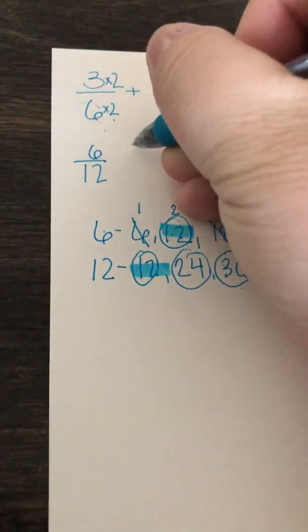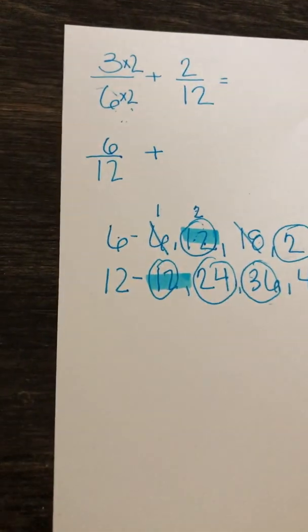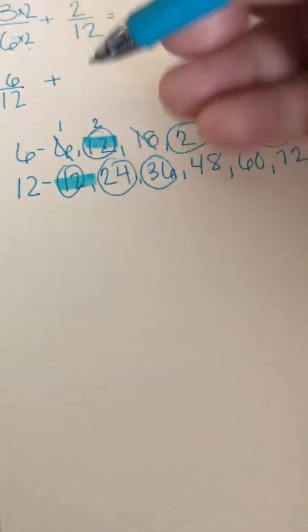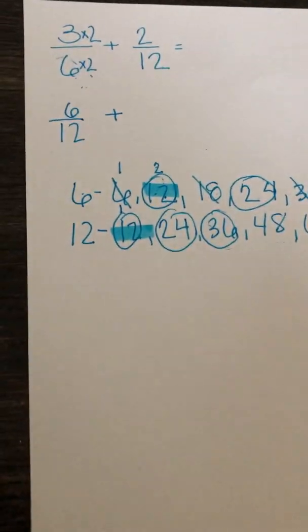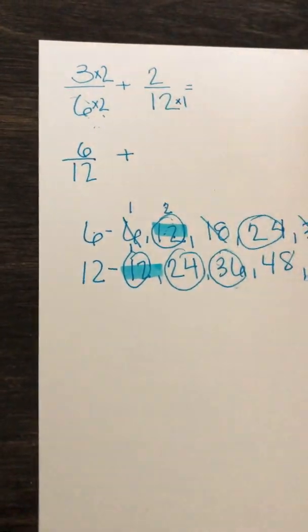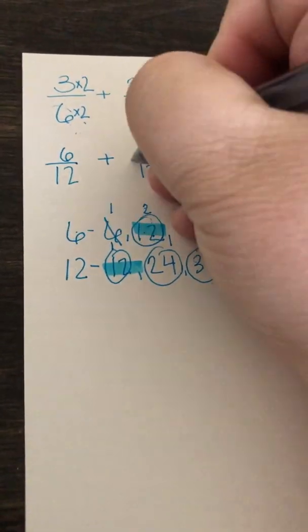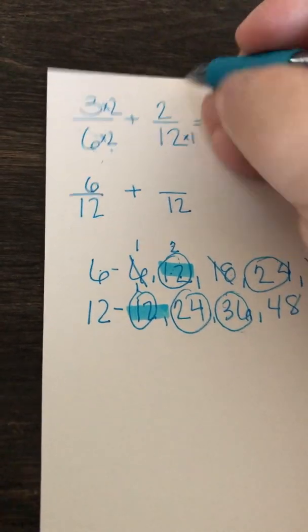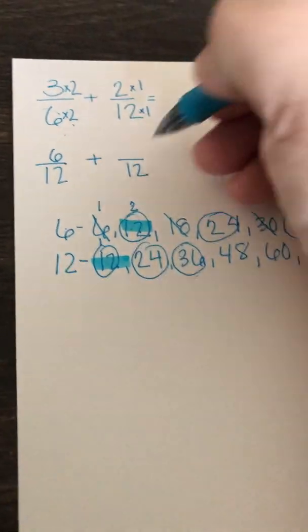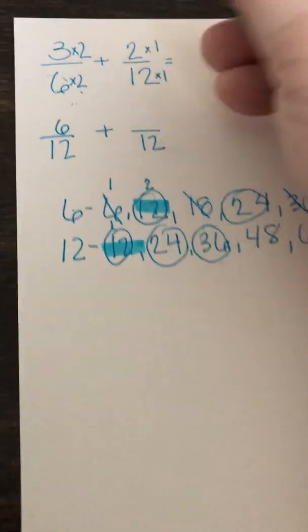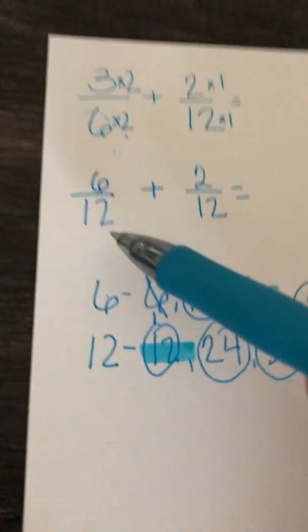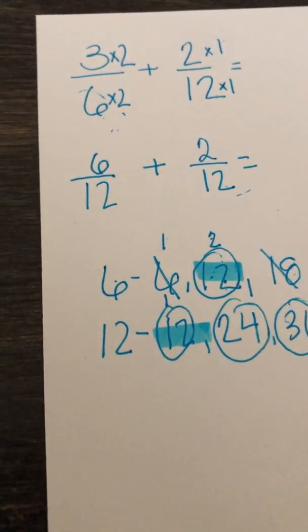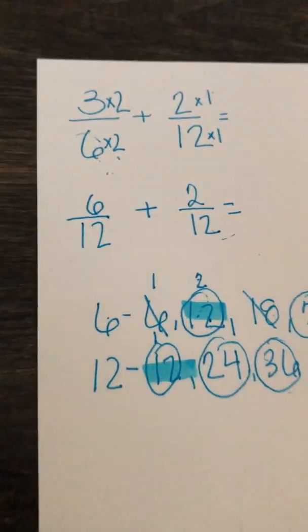Very good. Now we bring down that addition symbol. How many times do we have to skip count 12 to go to 12? Well, it looks like just a 1. So 12 times 1 is 12. And remember, whatever we do to the denominator, we have to do to the numerator. So 12 times 1 is 12, and 2 times 1 is 2. Now look at this — we're looking at our problem again. Does it have the same denominator? It does. So we're good.